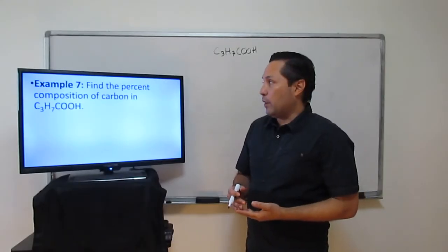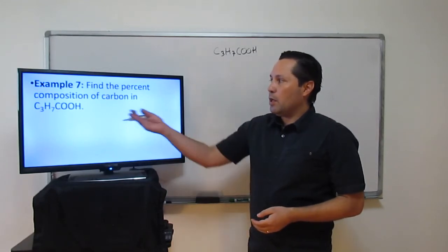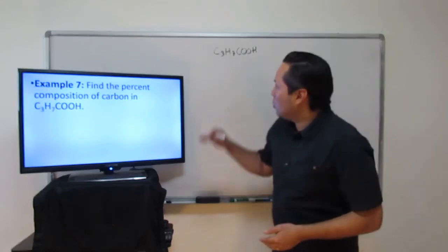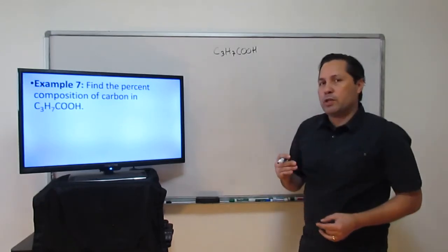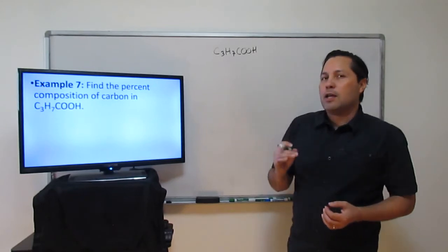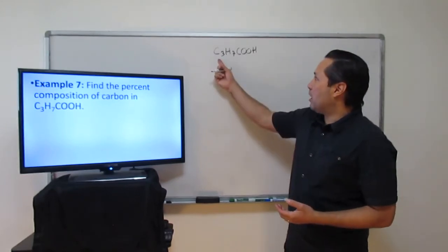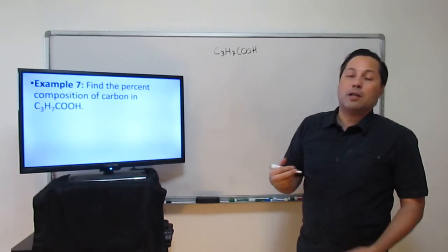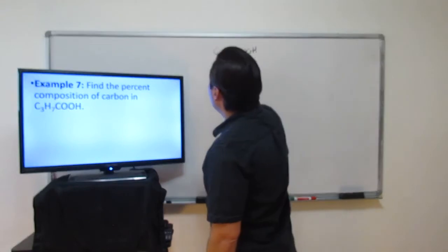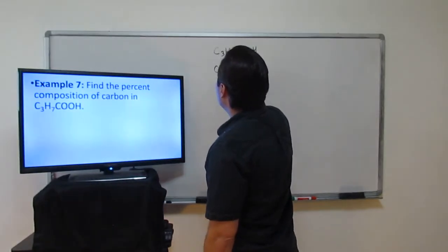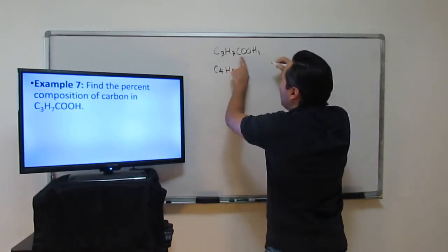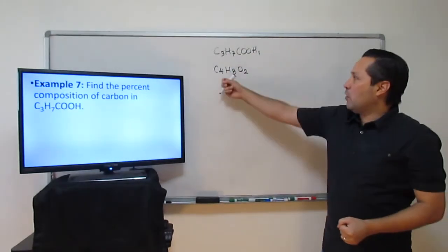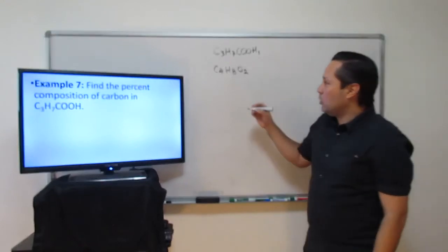In example 7 we're asked: find the percent composition of carbon in C3H7COOH, which is butanoic acid. One thing to notice is there are common elements spread across the formula — we can summarize: there are 4 carbons total, 8 hydrogens (7 + 1), and 2 oxygens. Now let's find the molar mass of butanoic acid — so we have 4 carbons, 8 hydrogens, and 2 oxygens.